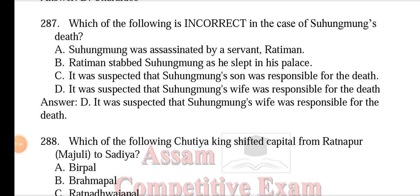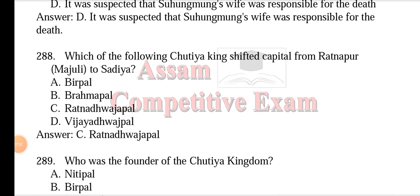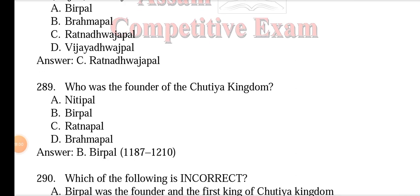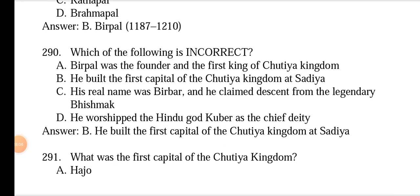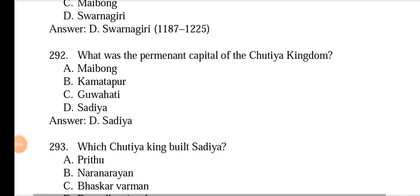The Sutia king who shifted the capital from Ratnapur to Sati Mazuli to Sadia was Ratna Dhash Pal. The founder of the Sutia kingdom was Birpal (1187–1210). Birpal's real name was Birbar, and he claimed descent from a legendary ancestor. He worshipped the Hindu god Kuber as the chief deity. The first capital of the Sutia kingdom was Swarnagiri. The permanent capital of the Sutia kingdom was Sadia, a region of Tinsukia. The city named Sindhu Kshetra was changed to Sadia after the death of a prince who was the son of a Sutia king.